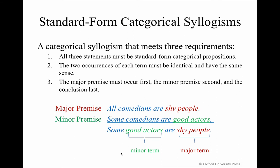This won't be critical when you're using Venn diagrams to test an argument for validity, but it is good standard practice to keep yourself organized. You will want your argument in standard form when you employ the rules of the syllogism, since those rules refer to major and minor terms as well as the middle term.